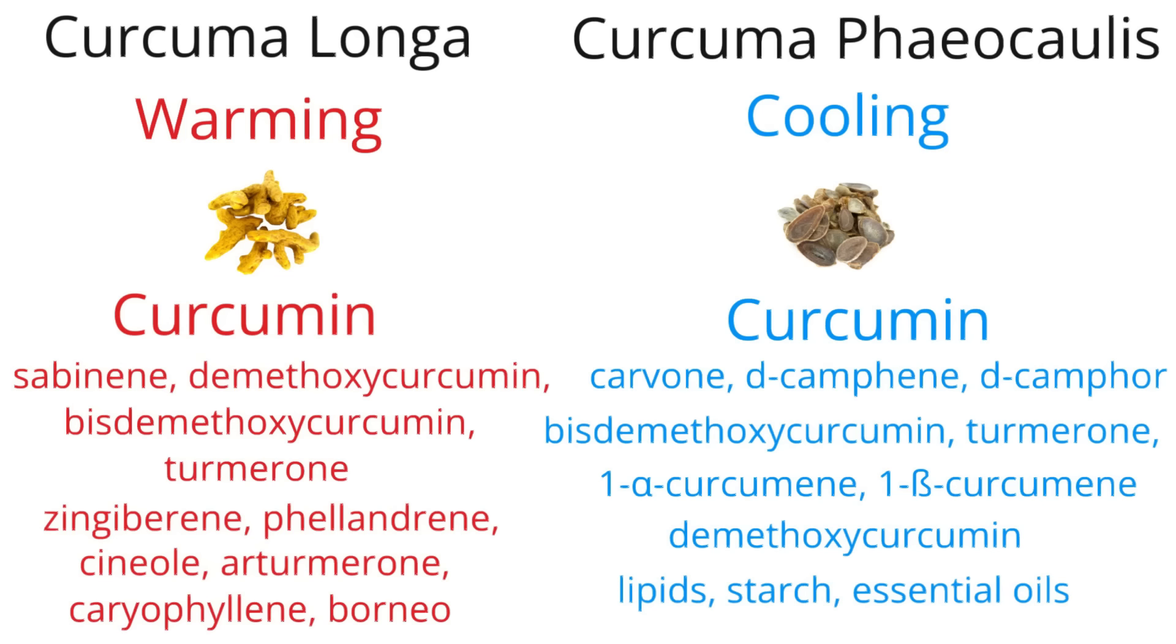You can see that both varieties contain curcumin, which again is the chemical that gives movement in the body. But the Curcuma longa variety gives movement with a chemical concentration that is suited for those who tend to run cold, and the Curcuma zedoaria has a chemical concentration that gives movement to the body while cooling you down and is better for those who run hot.